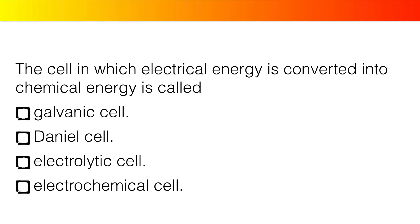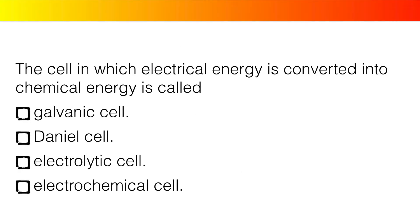The cell in which electrical energy is converted into chemical energy is called galvanic cell, daniel cell, electrolytic cell, electrochemical cell.